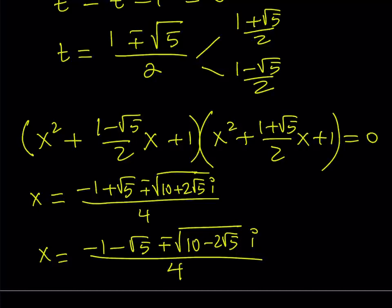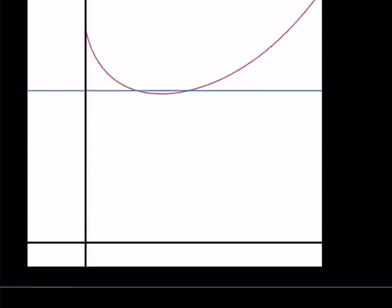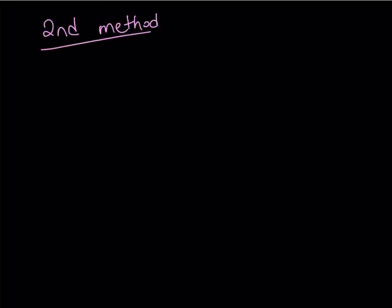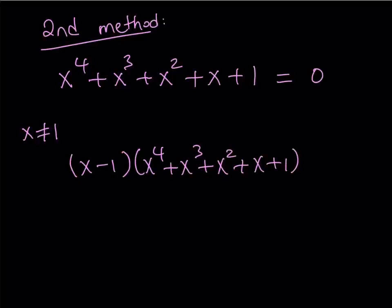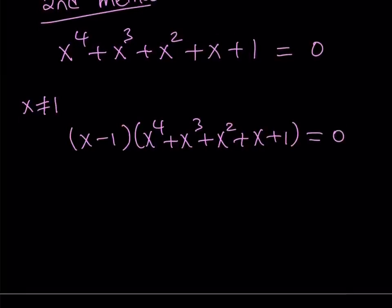That's the first method. Let's look at it from another perspective — the second method. Our second method involves some interesting ideas. So I have the quartic — let me rewrite it. This is an interesting quartic because all the coefficients are one, which tells us it's a special quartic. I'm going to multiply both sides of this equation by x minus one, assuming first that x does not equal one, because multiplying both sides by zero is not okay. If you multiply both sides by x minus one, you get something super nice: x to the fifth minus one equals zero.